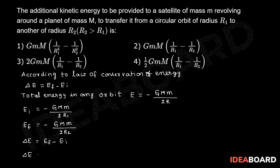So, delta E is equal to minus GMm by 2, into 1 by R2 minus 1 by R1.